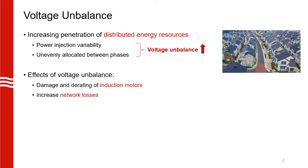Why is voltage unbalance an important issue to address? There are two main reasons. One, it gives rise to negative sequence voltages that can affect expensive equipment like induction machines, which are by far the most commonly found loads in distribution grids. The other reason is that it also gives rise to zero sequence currents which flow between the neutral connections and increase network losses.